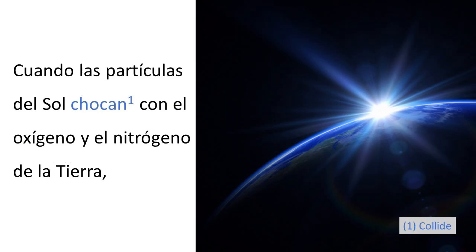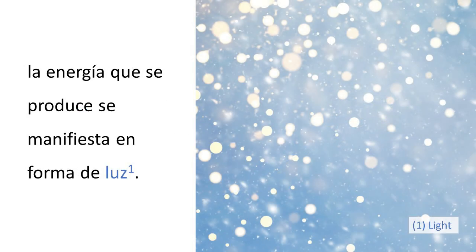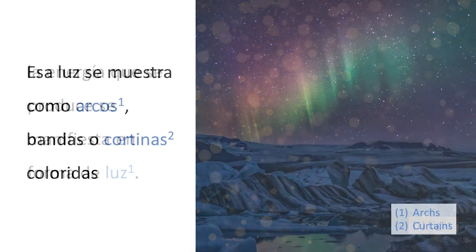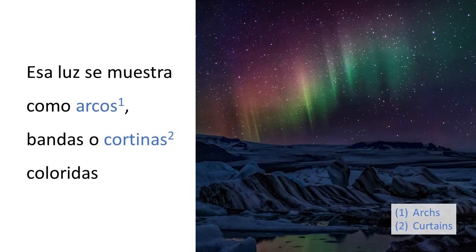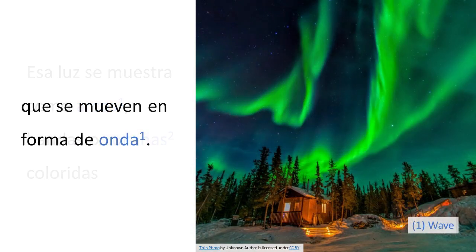Cuando las partículas del sol chocan con el oxígeno y el nitrógeno de la Tierra, la energía que se produce se manifiesta en forma de luz. Esa luz se muestra como arcos, bandas o cortinas coloridas que se mueven en forma de onda.